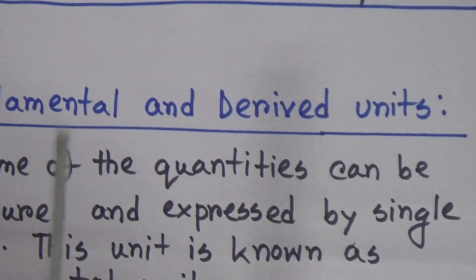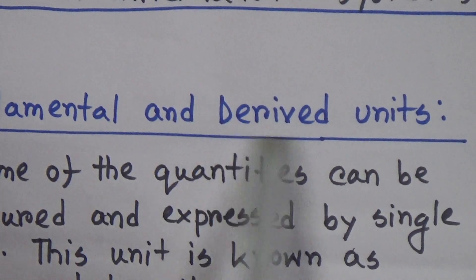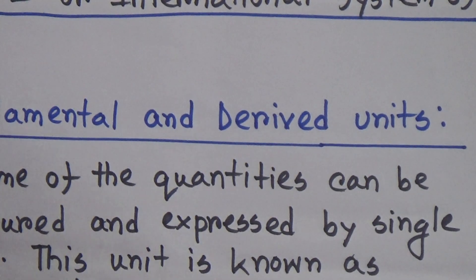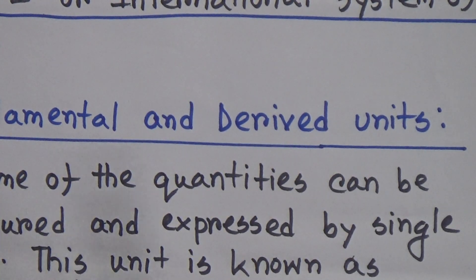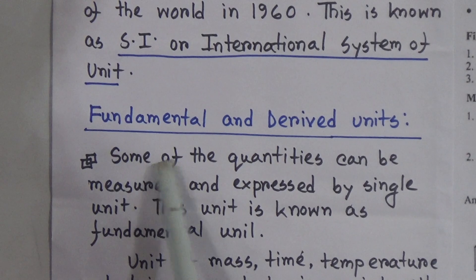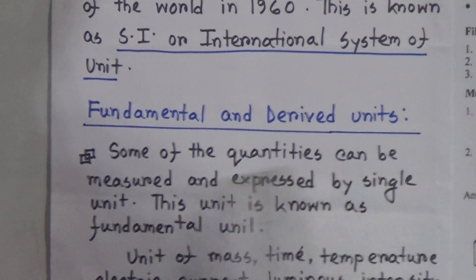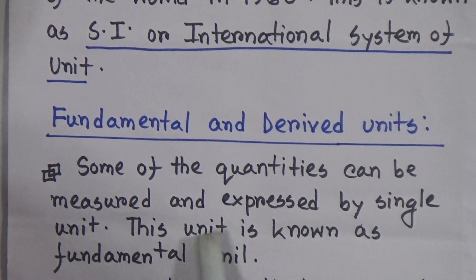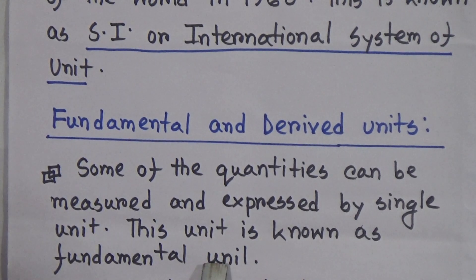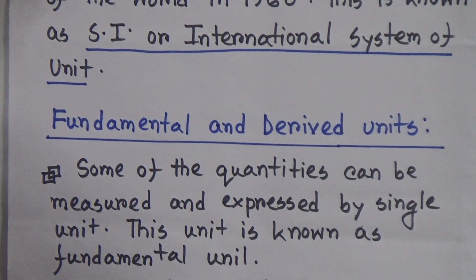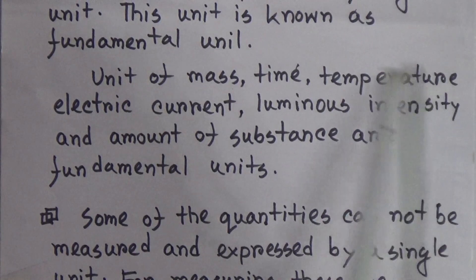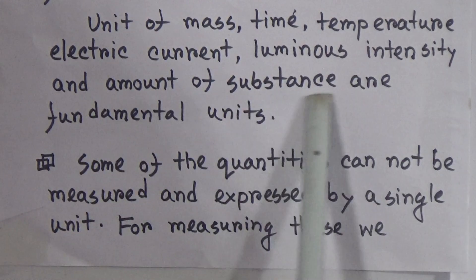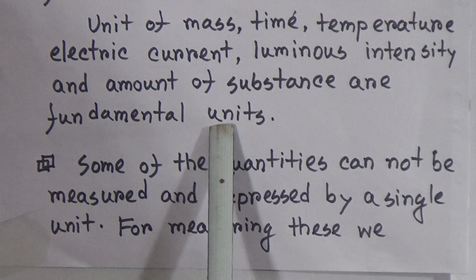Now, what is a fundamental unit and what is a derived unit? The main core unit is fundamental unit — that means a single unit. Some quantities can be measured and expressed by a single unit; this unit is known as fundamental unit. Units of mass, time, temperature, electric current, luminous intensity, and amount of substance are fundamental units.